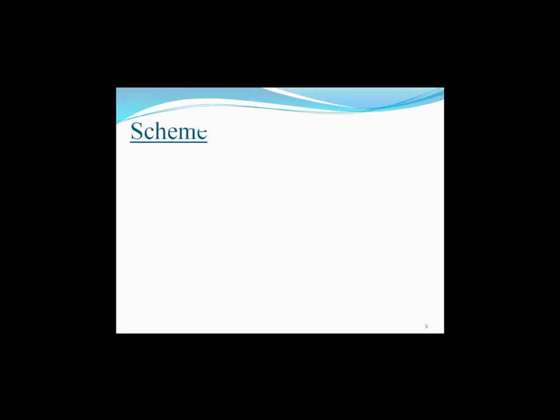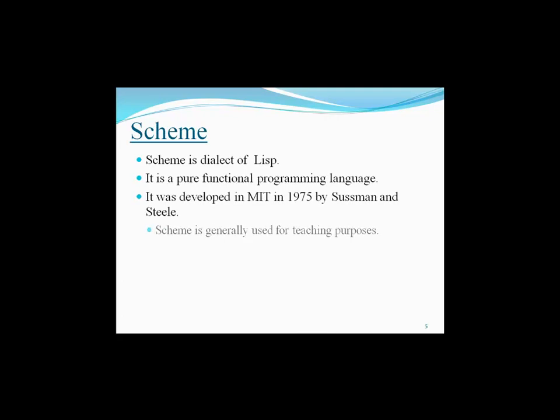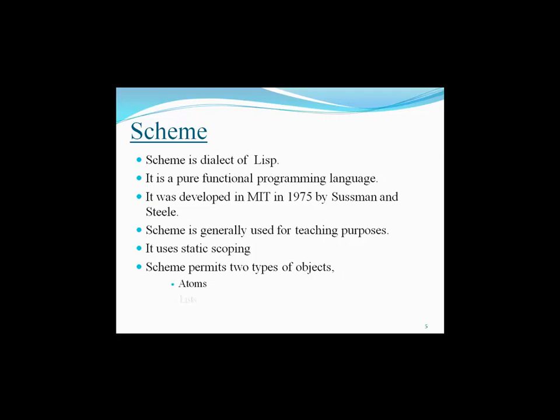Now, we will be discussing on Scheme. Scheme is a dialect of Lisp. It is a purely functional language, which was developed at MIT in 1975 by Sussman and Steele. Scheme is generally used for teaching purposes. It uses static scoping. Scheme permits two types of objects: lists and atoms.